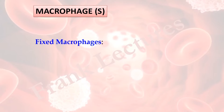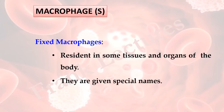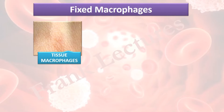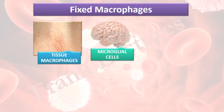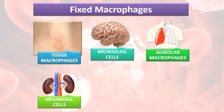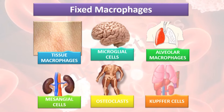Fixed macrophages are resident in some tissues and organs of the body and they are given special names. For example: in skin they are known as tissue macrophages; in the brain, microglial cells; in the lungs, alveolar macrophages; in the kidney, mesangial cells; in bones, osteoclasts; and in the liver, Kupffer cells.